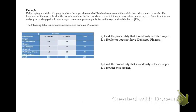Now let's find the probability that a randomly selected roper is a header or a healer. Remember, header is H. Healer is L. And our keyword here is OR, which means union. So the probability of a header or a healer can be written like this. Now we need to decide what formula to use. And that formula depends on whether these events are mutually exclusive or independent.